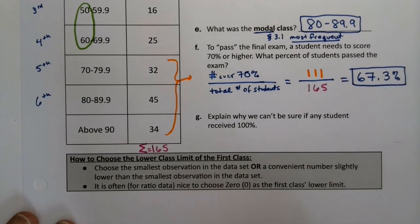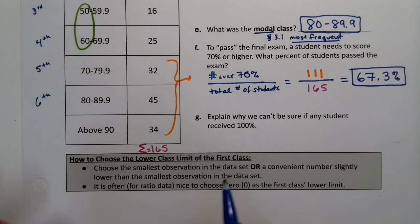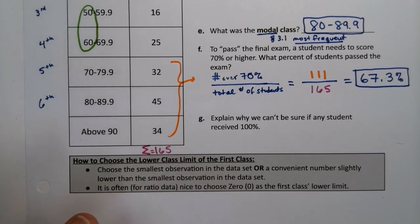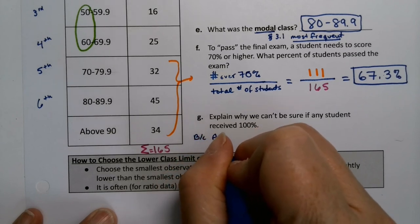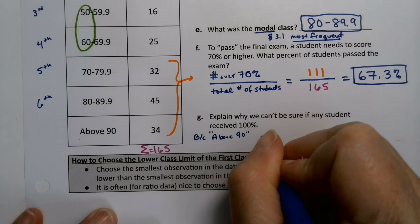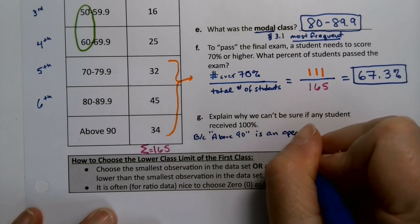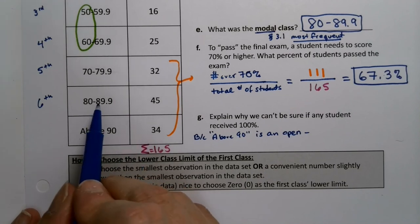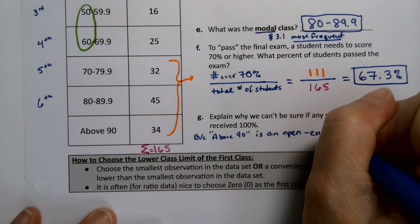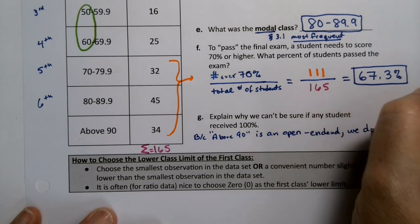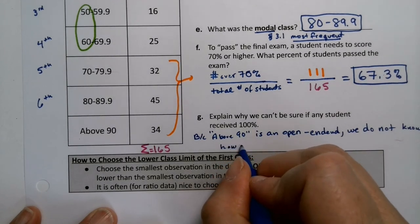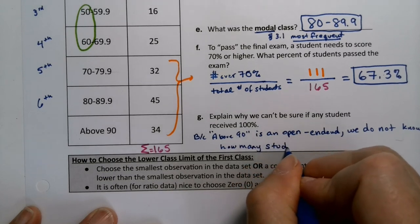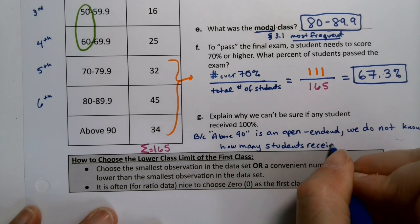Now, why can't we be sure if any student received 100%? Well, because I already mentioned this, this last class is open-ended. Because it's open-ended, we don't actually know what any of these 34 students received. So because the above 90 is an open-ended class, and even if it wasn't, honestly, we don't even know how many of these 45 got 80. We have no idea. But it is open-ended. We don't know how many students got any particular score. It's nothing special about 100.